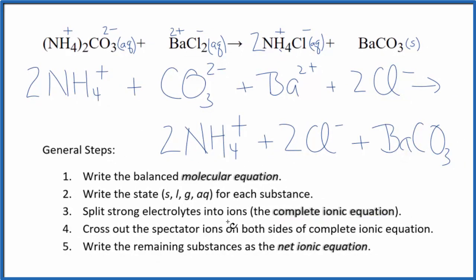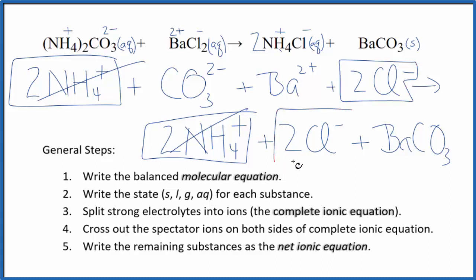Now we can cross out spectator ions. They're on both sides of that complete ionic equation. They haven't changed and we're just not interested in them. So when I look at the reactants here, and then I have the products. I have two ammonium ions here and in the products. I have two chloride ions right here and in the products. Everything else is unique. And that's the net ionic equation for ammonium carbonate plus barium chloride.